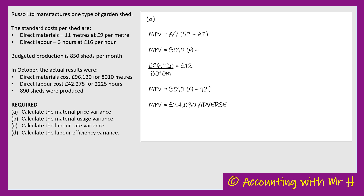I've put the word adverse on the answer. When doing variances, a variance always needs either the word favourable or adverse after the figure. Adverse is bad — something is worse than was expected. Favourable is good — something was better than expected. In this case, they paid £12 per metre when they'd expected to pay £9 per metre. That's bad — it's adverse. They paid £3 more per metre of material than the standard.